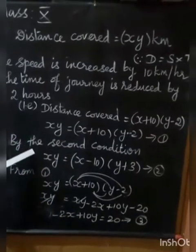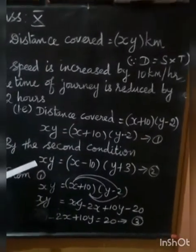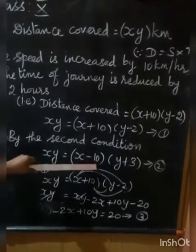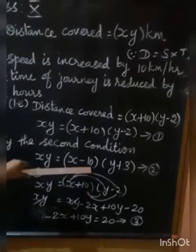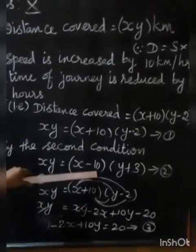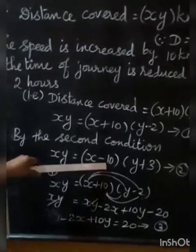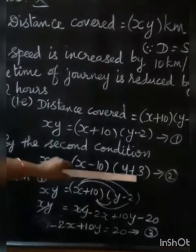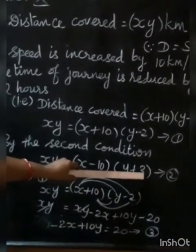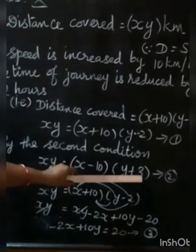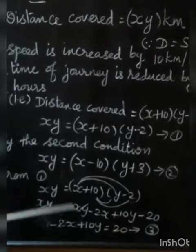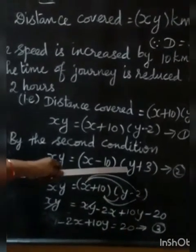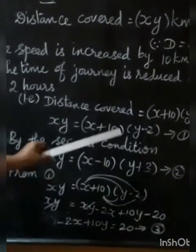By the second condition: speed is slow by 10 km per hour, so speed becomes X minus 10. Time is increased by 3 hours, so time becomes Y plus 3. Therefore, XY is equal to X minus 10 into Y plus 3.